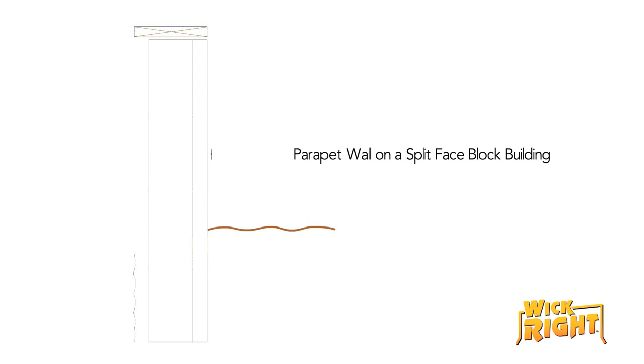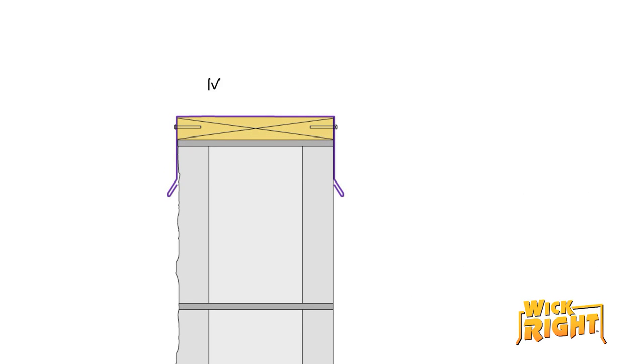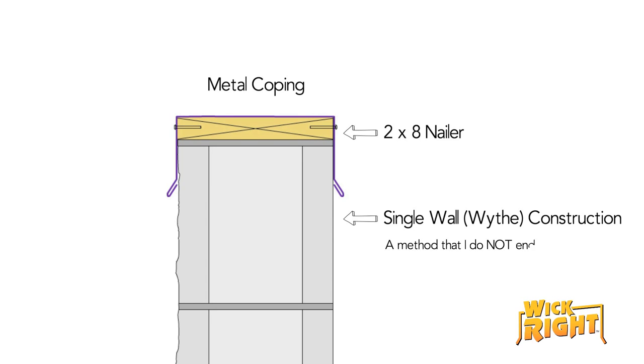This is a cross section of a parapet wall on a brand new split-face block building with a traditional metal coping on top. Under the metal coping is a 2x8 piece of lumber. This is a single wall or single wythe construction and not a construction method I endorse.